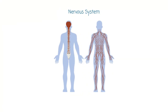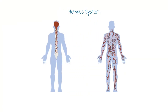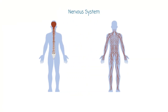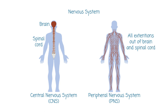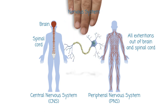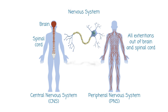We can also categorize the nervous system based on anatomy. Anatomically, we have the central nervous system, or CNS, which contains the brain and the spinal cord, and the peripheral nervous system, or PNS, which includes our extensions outside of the CNS. In both CNS and PNS, the major functional unit is the neuron.